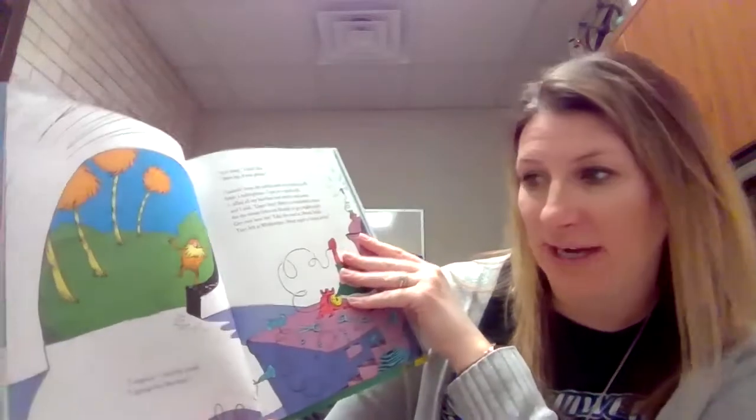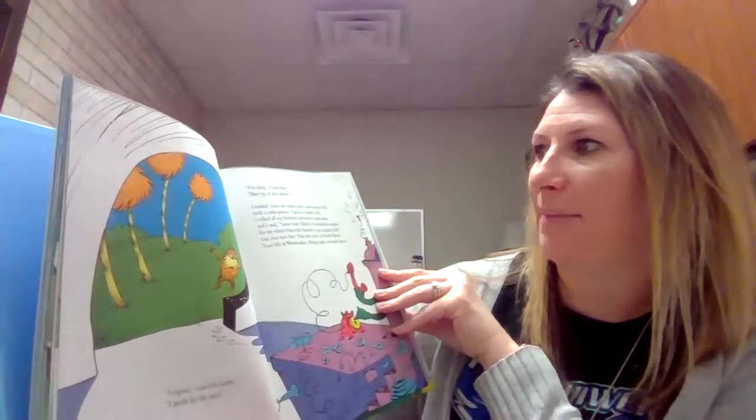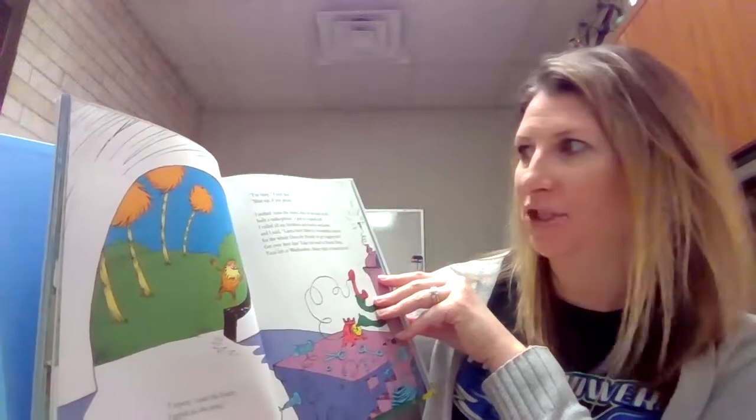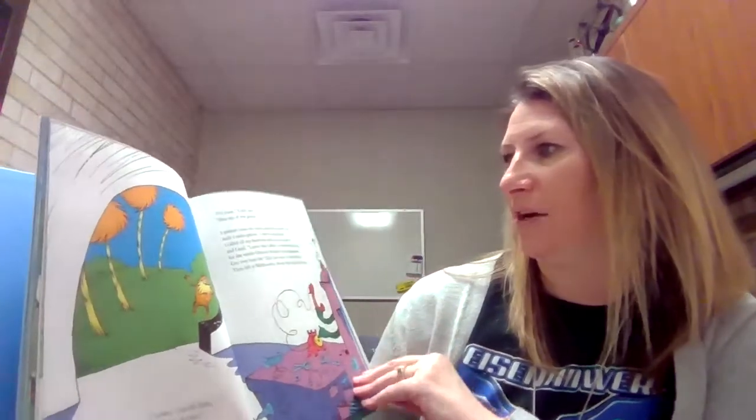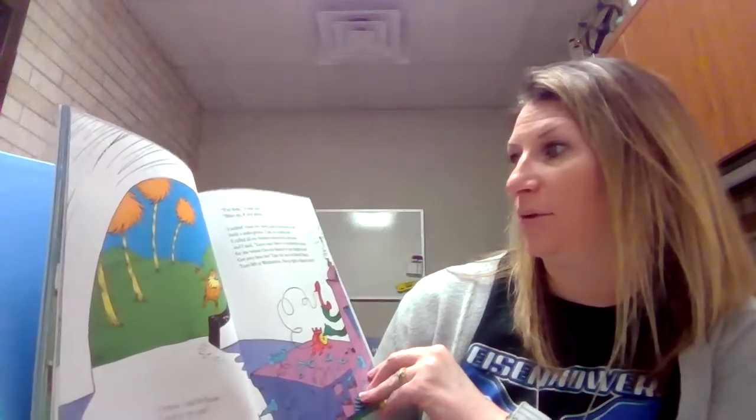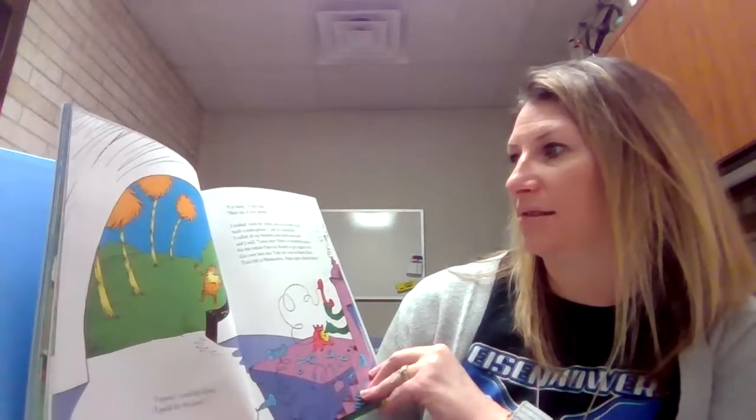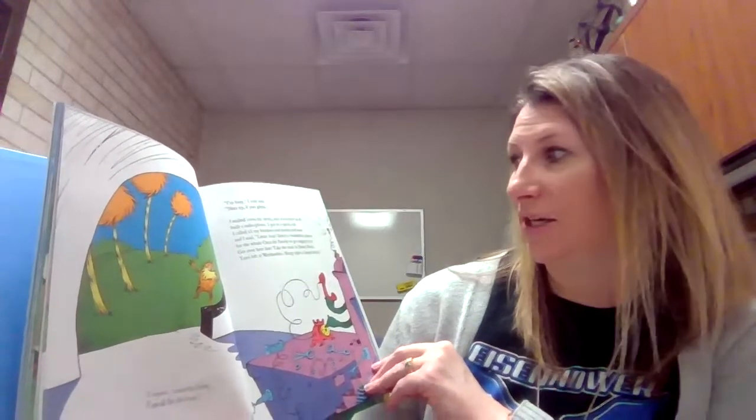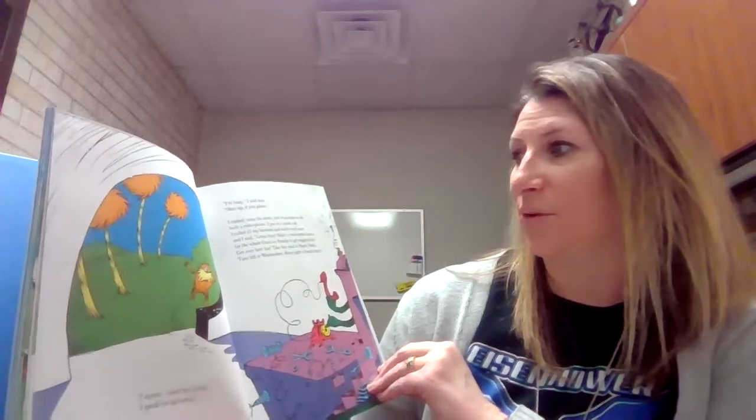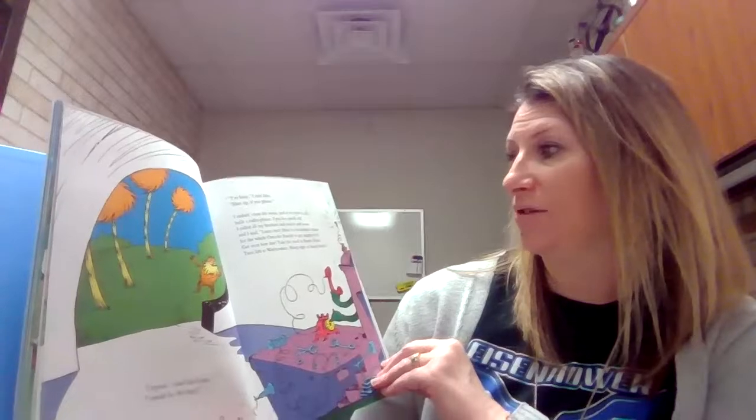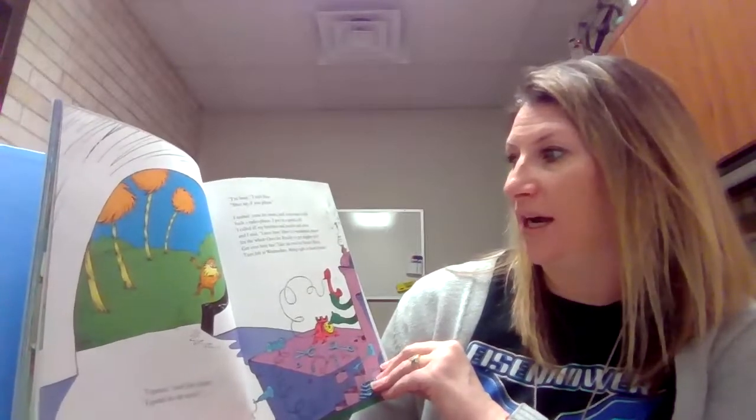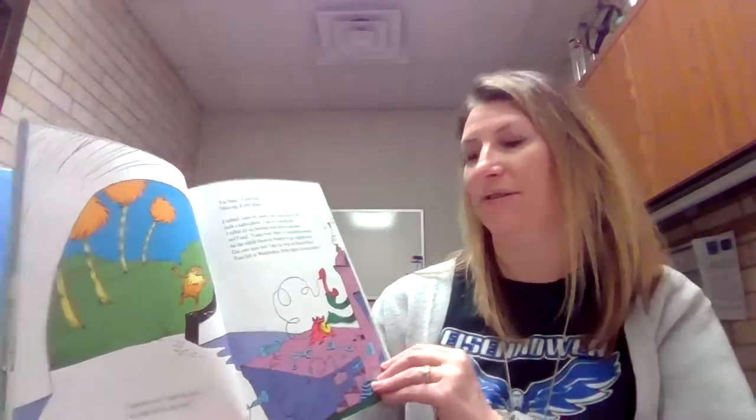I repeat, cried the Lorax. I speak for the trees. I'm busy, I told him. Shut up, if you please. I rushed across the room and in no time at all built a radio phone. I put in a quick call. I called on my brothers and uncles and aunts, and I said, listen here. Here's a wonderful chance for the whole Once-ler family to get mighty rich. Get over here fast. Take the road to North Nitch. Turn left at Weehawken. Sharp right at South Stitch.